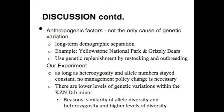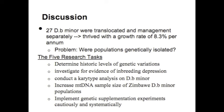Microsatellite DNA markers were also used to observe levels of genetic variation, finding that as long as heterozygosity and allele numbers stayed constant, no management policy change was necessary. From these two approaches, we concluded there are lower levels of genetic variation within the KZN D. b. minor, but it was not a cause for concern. This is supported by the similarity of allelic diversity and heterozygosity of KZN D. b. minors to other subspecies, and the higher diversity within the D. b. bicornis meta-population compared to other large African mammals. A new experiment translocated 27 D. b. minors to Zimbabwe, and this population thrived at a growth rate of 8.3% annually, with the only concern being whether populations were genetically isolated longer than previously considered.